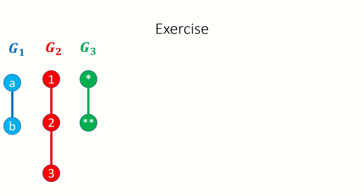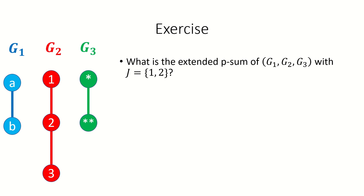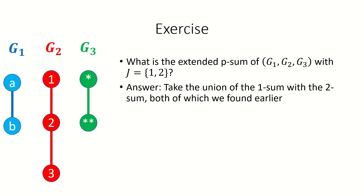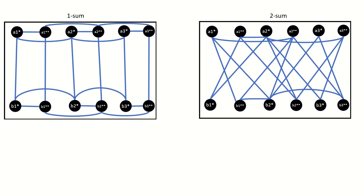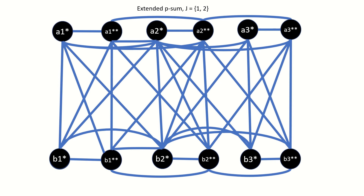As another example, the extended p-sum of the same input graphs as before with set j equal to {1, 2} will be the graph union of our two previous results, which were the 1-sum and 2-sum of the input graphs. Here's the result.